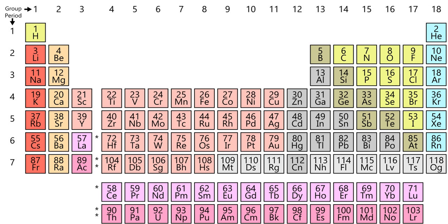No element heavier than Einsteinium has ever been observed in macroscopic quantities in its pure form, nor has astatine; francium has been only photographed in the form of light emitted from microscopic quantities. A group or family is a vertical column in the periodic table. Groups usually have more significant periodic trends than periods and blocks. Modern quantum mechanical theories of atomic structure explain group trends by proposing that elements within the same group generally have the same electron configurations in their valence shell.